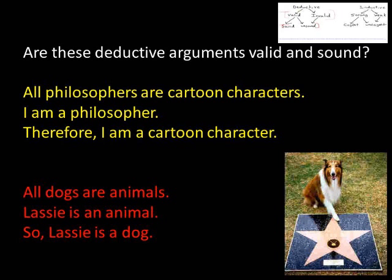On this screen we see two arguments — try evaluating them using the vocabulary from that chart. The first argument is valid because it's impossible for the conclusion to be false if you assume the premises are true. You may object because the first premise is obviously false, but remember that validity is an evaluation of the inference, not the premises. Therefore this argument is valid but unsound, because it has a good inference but false premises — specifically 'all philosophers are cartoon characters.'